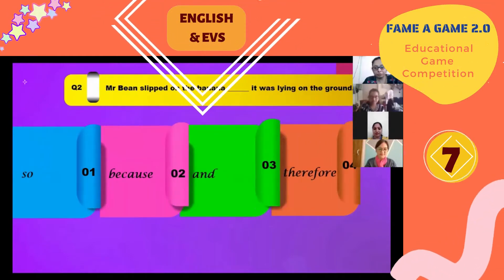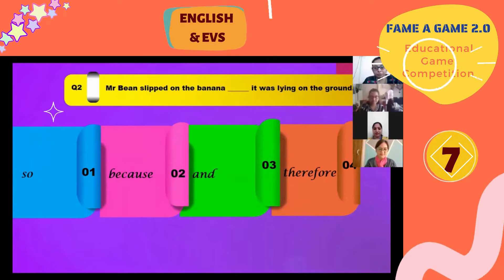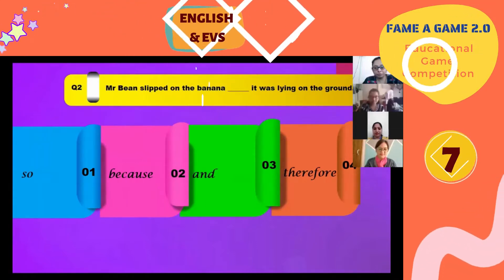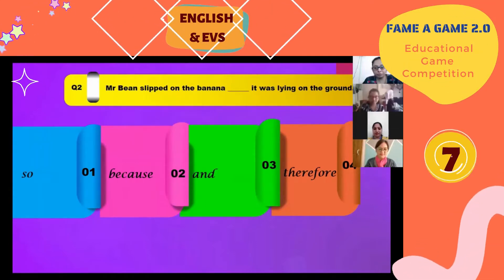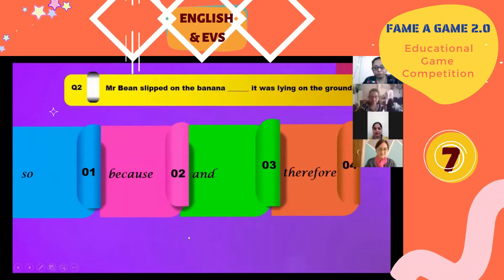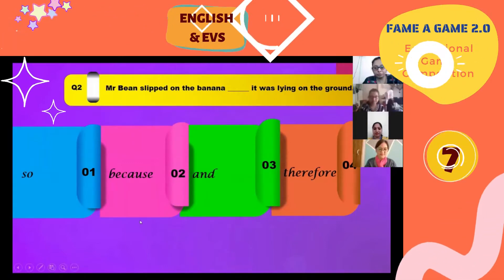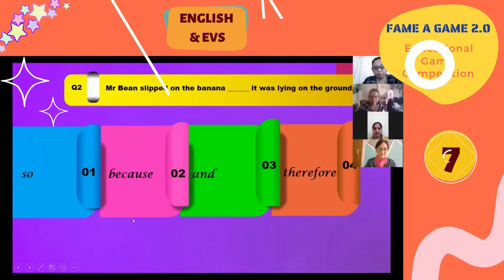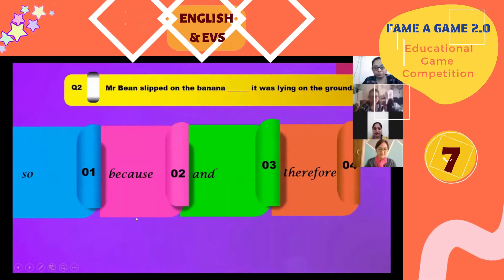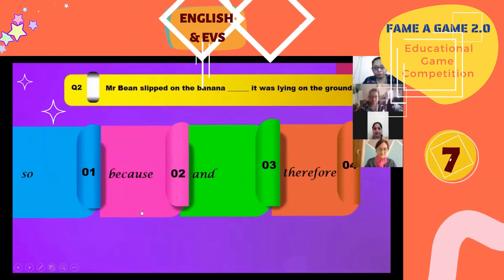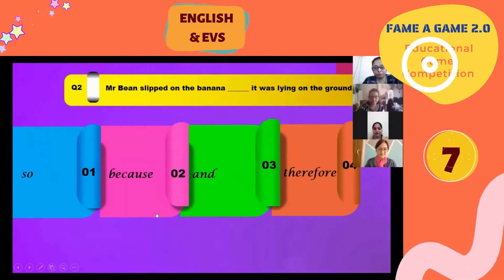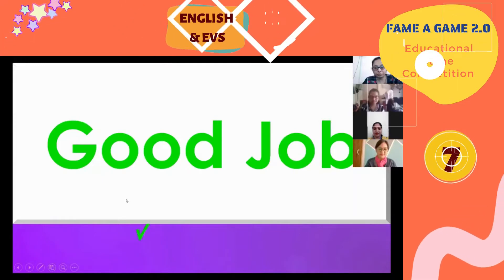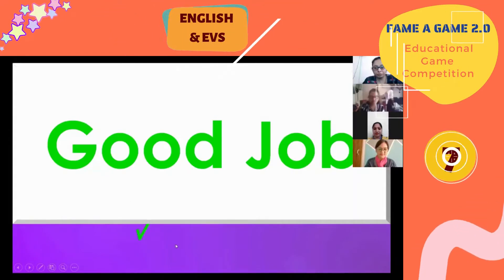Second question: 'Mr. Bean slipped on the banana; it was lying on the ground.' Anyone can give me an answer and I will click as per your option. Clicking on option two gives: 'Wow, Good Job!'